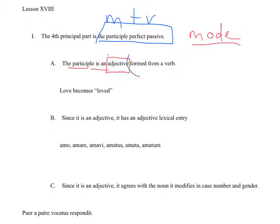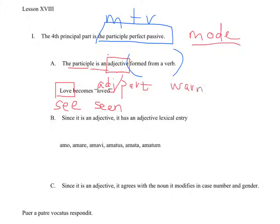For the sake of understanding where it comes from and why we identify it with mood, tense, and voice like another verb — it's because it's an adjective that is formed from a verbal root. For example, the verb love can become the adjective or participle loved. You can have the verb see become the participle perfect passive seen. You can have the verb warn become the participle perfect passive warned. The boy was warned. The missing hat was seen. The girl was loved. That's what a participle is — it's an adjective made out of a verbal stem.